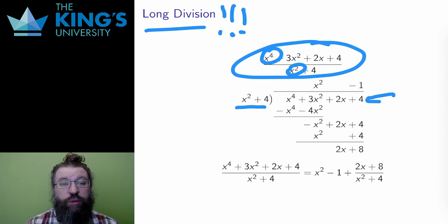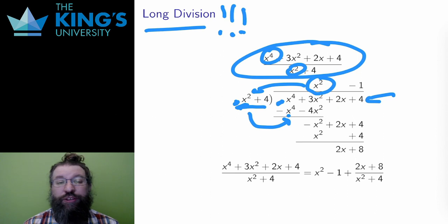Then I look at the degrees. The highest degrees are x squared and x to the 4. And I ask, how can x squared go into x to the 4? What do I need to multiply by to make this work? Well, I need to multiply by x squared. So, I write x squared in the numerator. Then I multiply x squared by x squared plus 4 and subtract. And the result is subtracting x to the 4 minus 4x squared from the original numerator. The x4s will cancel.